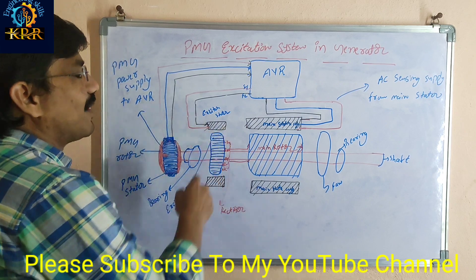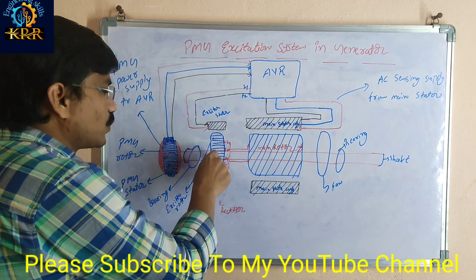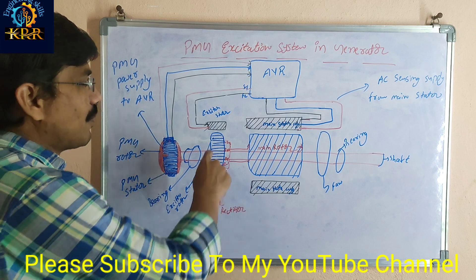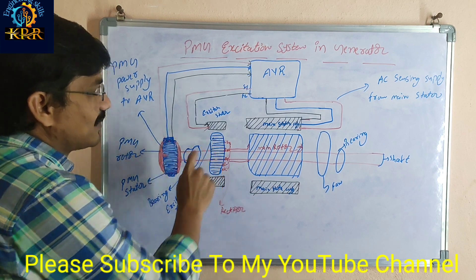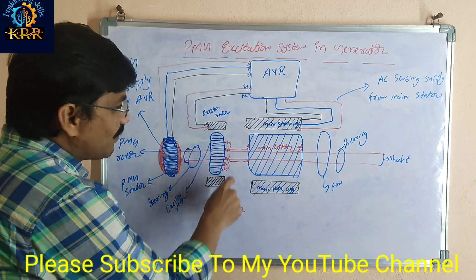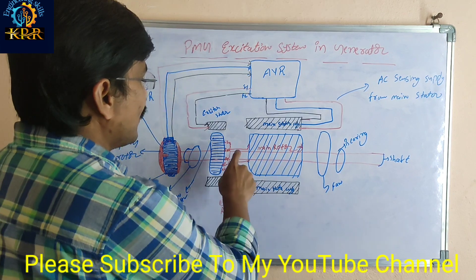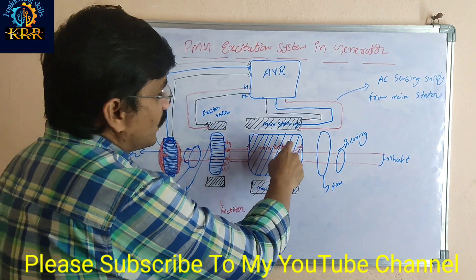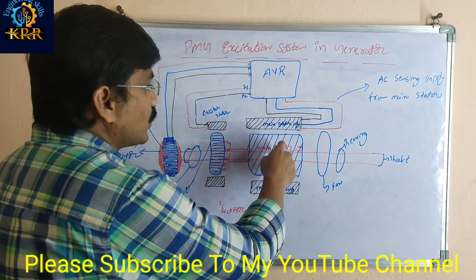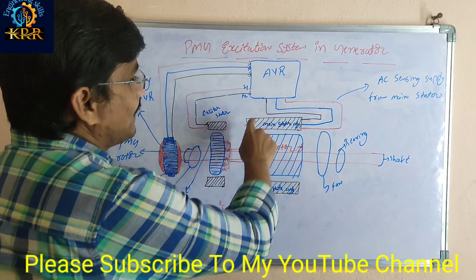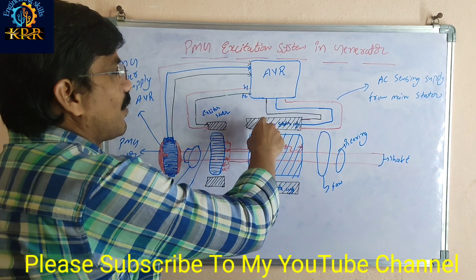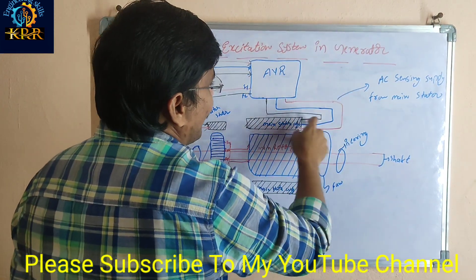The exciter stator winding receives power and current flows through it, generating flux. This flux cuts through the exciter rotor, inducing EMF and generating AC power. This AC power is converted to DC power by the rectifier. The DC power passes through the main rotor winding, generating flux that cuts the stator winding and induces EMF, generating output power.